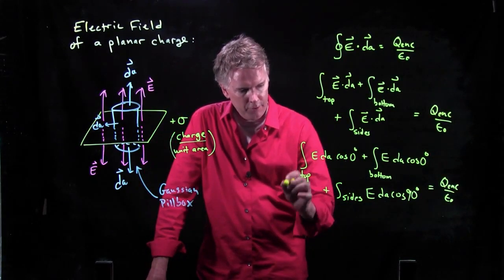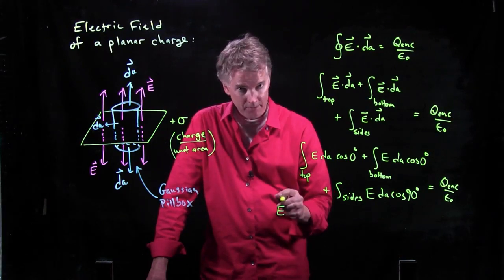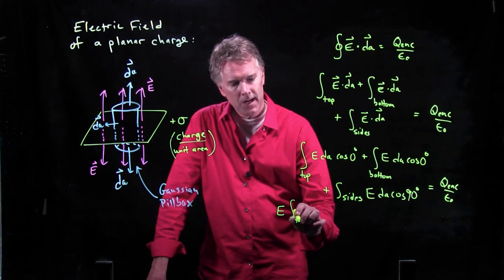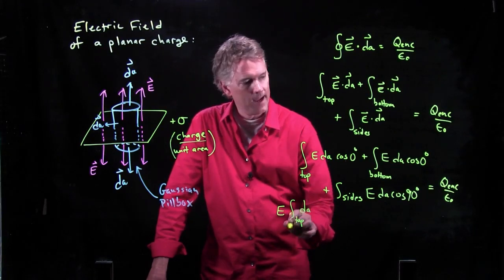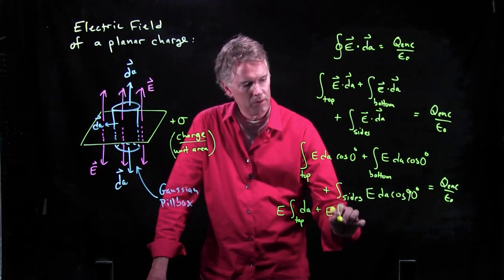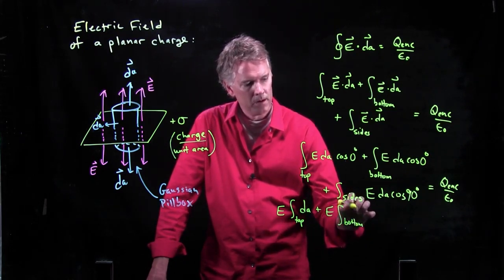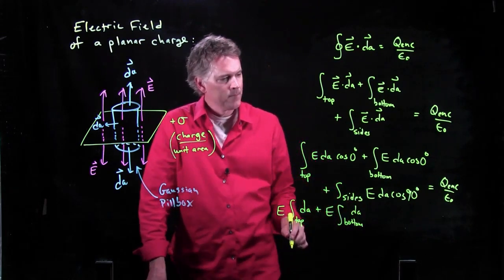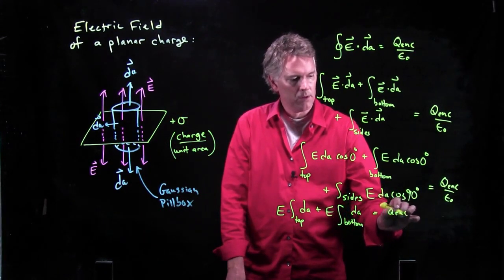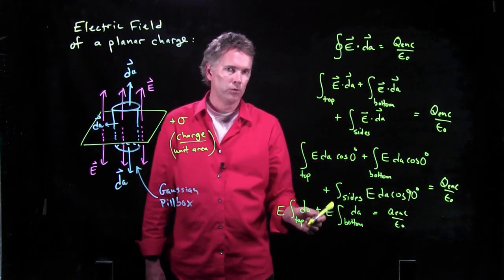All right, let's finish this up. This first one, we can pull E out of the integral. It is constant. And the integral over DA for the top is left. We have E times the integral over the bottom of DA. And all of that is going to equal Q enclosed over epsilon naught. Because this last term goes away. Cosine of 90 degrees is, of course, zero.